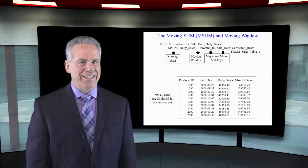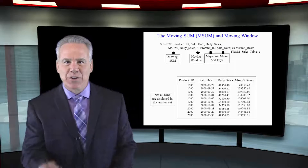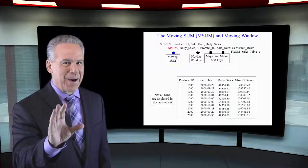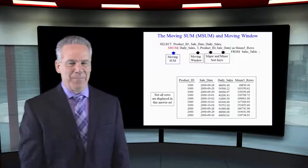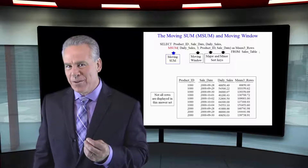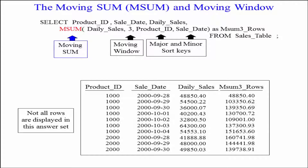We're back to using Teradata syntax, and this time it's going to be a moving sum — an mSum — with three parameters. We're going to do an mSum on daily sales, every three rows. That's called the moving window. We're going to have our sort key: first sort by product ID, and then by sale date. And now we're going to do a moving sum every three rows.